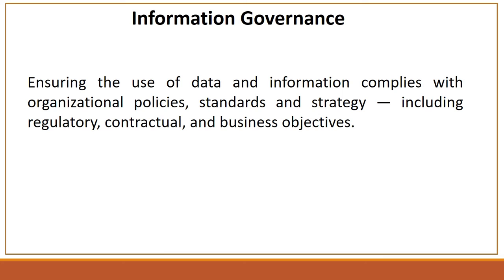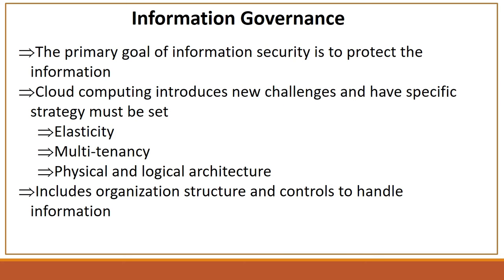Regulations and contracts. Information governance has different aspects in the overall governance. The information is the real value to any organization, which must be protected with the help of security controls. It is unlike traditional IT where everything was inside the data center — the cloud has different challenges. There must be a specific strategy set for elasticity, multi-tenancy, and physical and logical architecture. Information governance also includes the organizational structure and controls to handle the information.